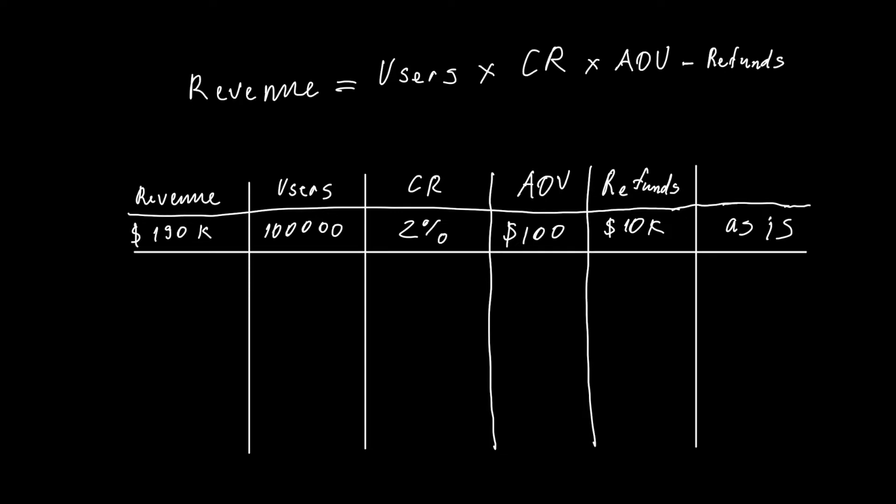So what we can do next is to estimate what metrics we can improve to double for instance our revenue. If we improve each metric by 30 percent it will double our revenue. Let me show you.